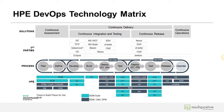This is the DevOps technology matrix, with swim lanes for Solutions, Third Parties, Process, and HPE. Across the top, notice the common denominator: continuous. Continuous assessment, delivery, integration, testing, release, and operations.